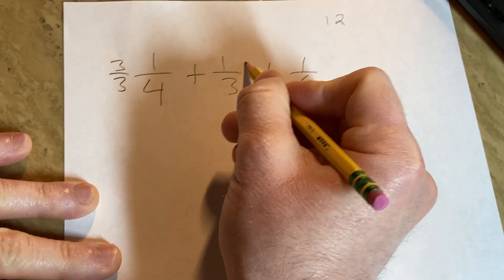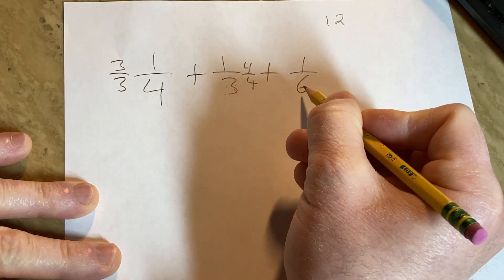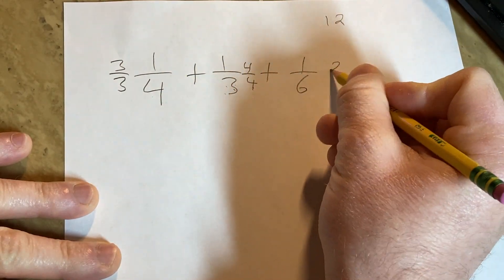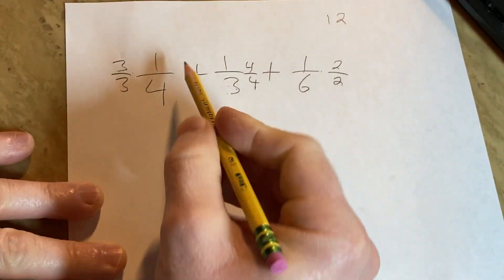Same thing here, we're missing a 4, so we do 4 over 4, because 4 times 3 is 12. Here we're missing a 2, because 2 times 6 is 12, so we do 2 over 2. We're basically multiplying by 1 in each case, and now we can multiply through.